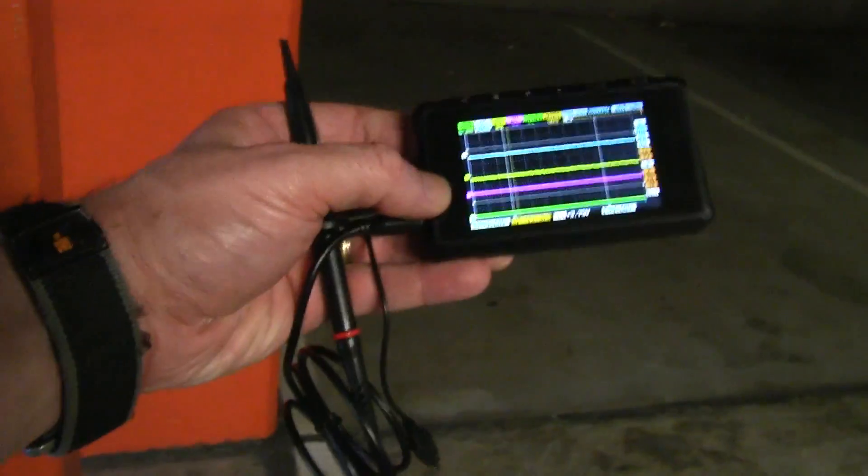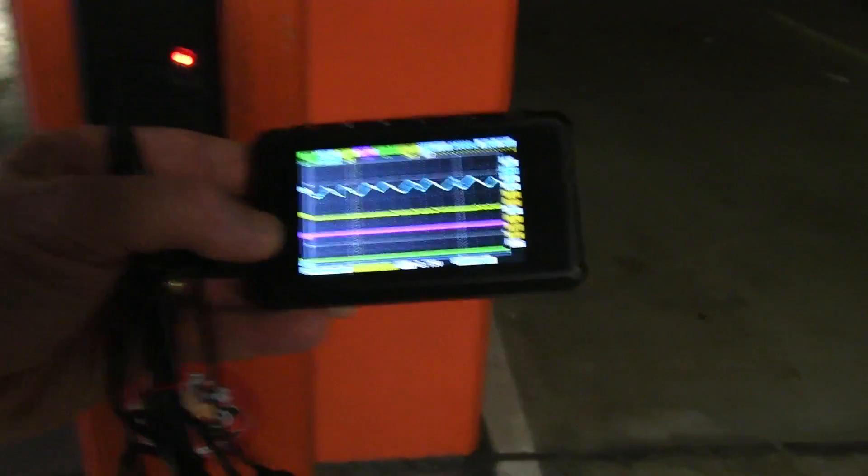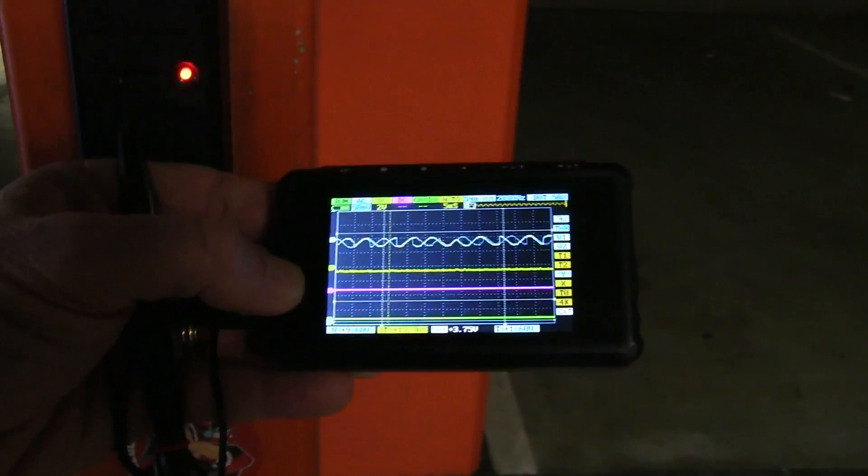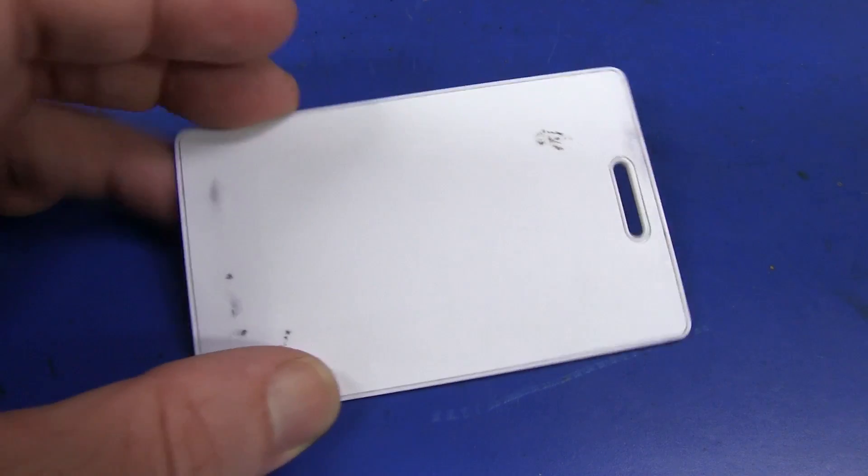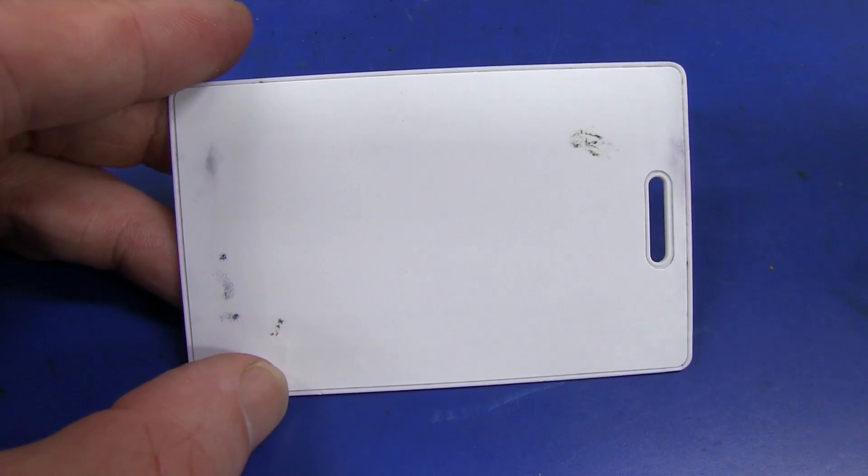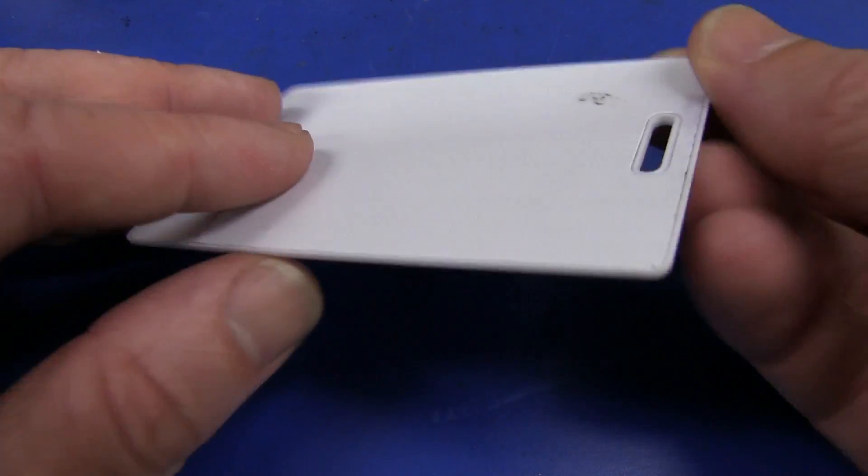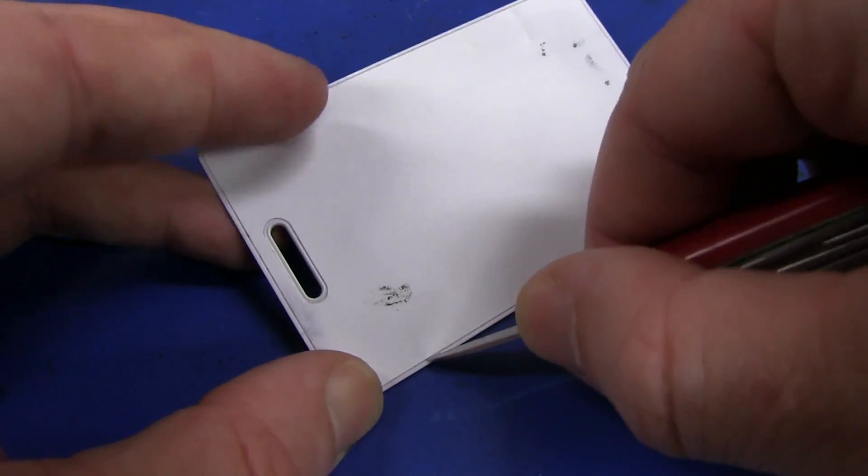I'm just using the probe, set it to 5 microseconds per division, and there we go. So there you go, it was a 125 kHz card and reader. So let's crack this thing open and see what we get, shall we?